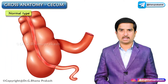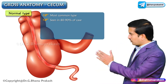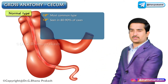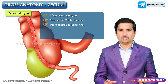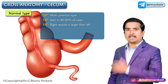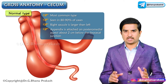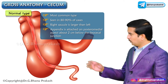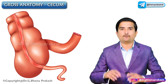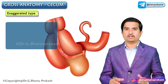The third type is the normal type, which is the most common, seen in approximately 80 to 90% of cases. Here the right saccule is larger than the left, and the appendix is attached on the posteromedial aspect about 2 centimeters below the ileocecal junction.